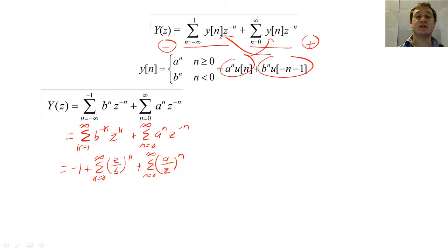Since we know how to solve both summations, we find that Y of Z equals this. The left fraction will converge when the absolute value of Z is less than B, and when the absolute value of Z is greater than A.